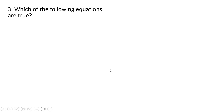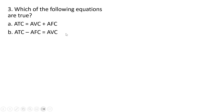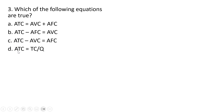Question three. Which of the following equations are true? Average total cost equals average variable cost plus average fixed cost — that is correct. Average total cost minus average fixed cost equals average variable cost — that is correct; if you subtract average fixed cost from both sides of the first equation, you get that result. Similarly, subtracting average variable cost from both sides gives answer choice C, which is also correct. And average total cost is total cost divided by the quantity of output is also correct. All of these answers are correct.